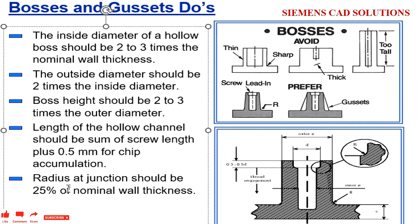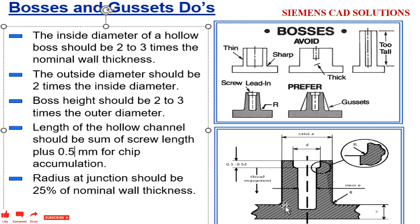Length of the hollow channel should be the sum of the screw length plus 0.5. So if you have a screw of length 10, your dimension from the head to the bottom should be 10.5 to accommodate the chip. If you are using self-tapping screws, the chips removed on the bosses will accumulate at the bottom. If you do not provide 0.5 clearance, the chip will be accommodated on the screw area itself and will create stress, which can lead to the part breaking.